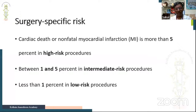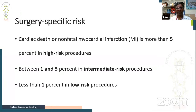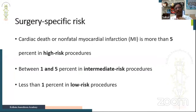Surgery-specific risk is classified by the risk of a major adverse cardiac event. High-risk procedures have a risk greater than 5% and include major vascular surgery, suprainguinal vascular surgery, thoracic, and head and neck surgery. Intermediate procedures have a risk between 1–5% and include laparoscopic cholecystectomy. Low-risk procedures with less than 1% risk include surface surgery such as breast surgery, incision and drainage, cataract surgery, and endoscopic surgeries.